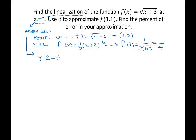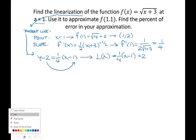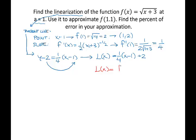We'll call it L of x for linearization. Taking the 2 to the other side, the linearization is L of x equals one fourth times (x minus 1) plus 2. Our textbook says the recipe is: the linearization equals f prime of a times (x minus a) plus f of a — the derivative at a times (x minus a) plus the value of the function at a. You can memorize this formula, but you can also just find the tangent line equation like we did.